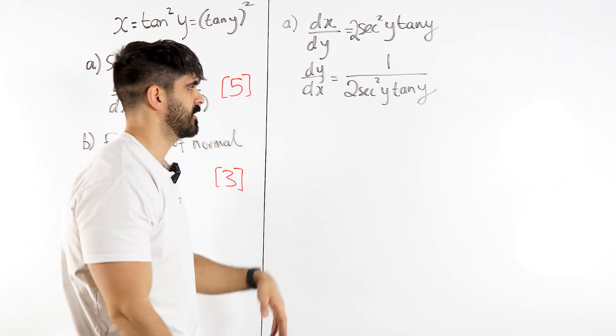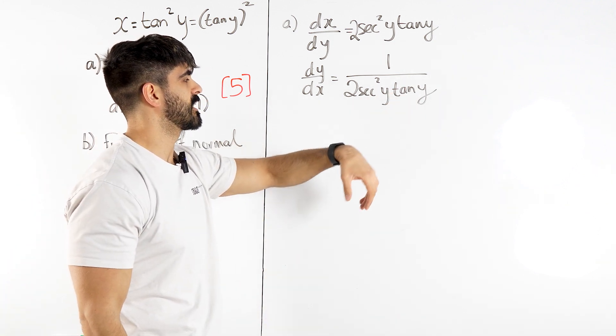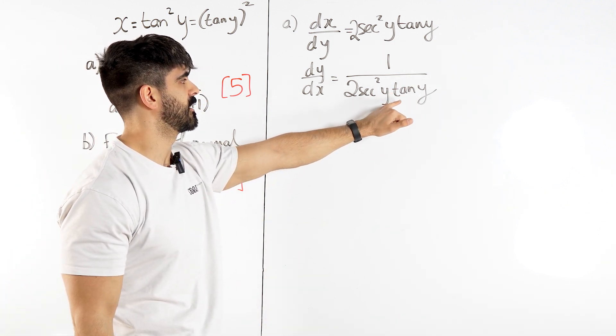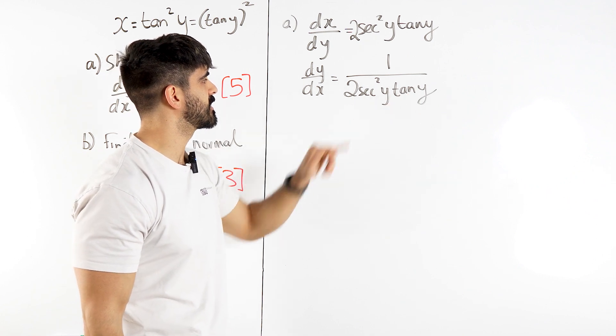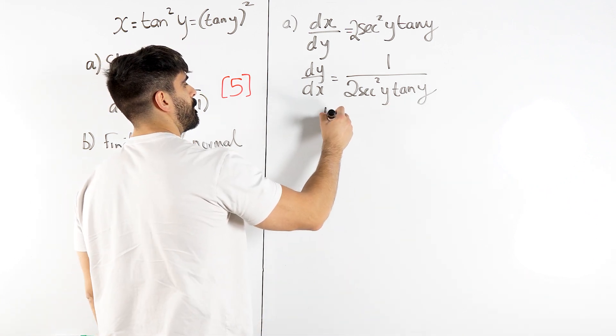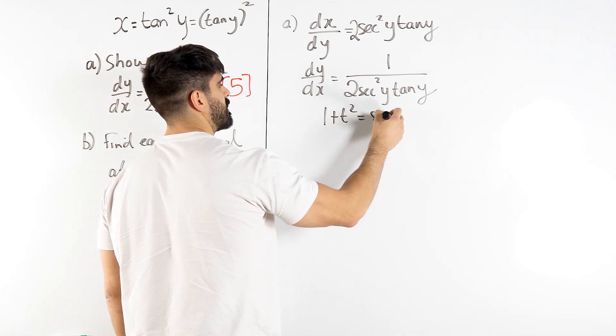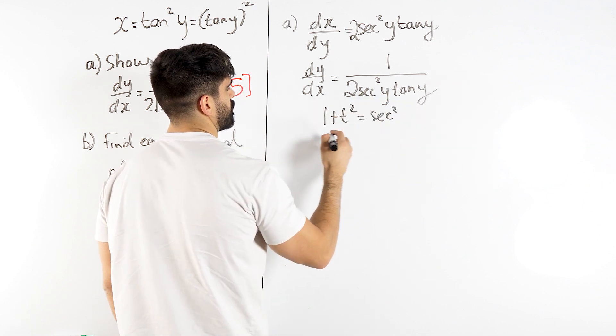They gave some range I think in the question, but yeah we take the positive version of this. So we have 2 root x then sec squared, we can think that 1 plus tan squared is sec squared, and we just replace that.